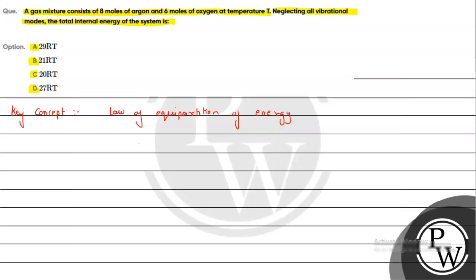The expression is U equals F by 2 RT. If we multiply with number of moles, it's N F by 2 RT, where F is degree of freedom, R is gas constant, T is temperature. We can write this expression further as U equals N Cv T.